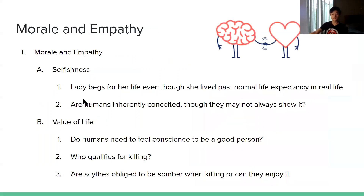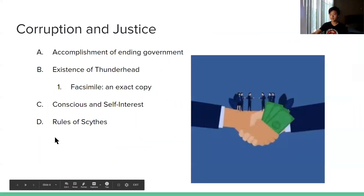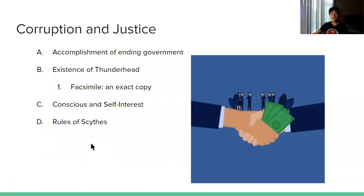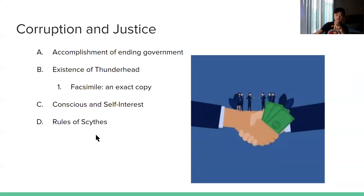Consciousness and self-interest. Thunderhead is not given authority to kill because it lacks consciousness, and Scythe can kill because they are human. Because Thunderhead lacks consciousness, it is also void of self-interest. So, is self-interest correlated with or a part of conscience? Also, we look at the ten rules of Scythe. Since Scythe are also humans, they will always try to manipulate or exploit their rules, and because no rules are free from loopholes, we will probably see them do that.